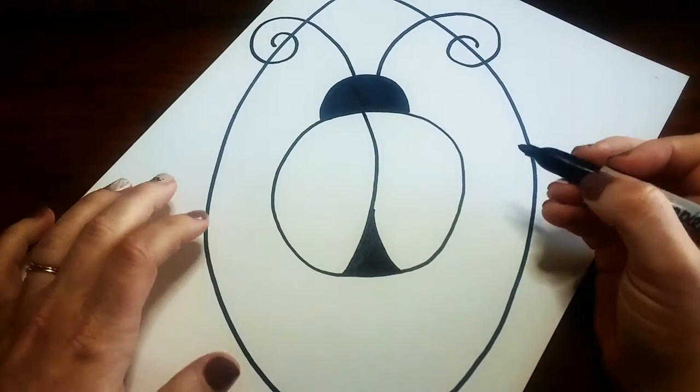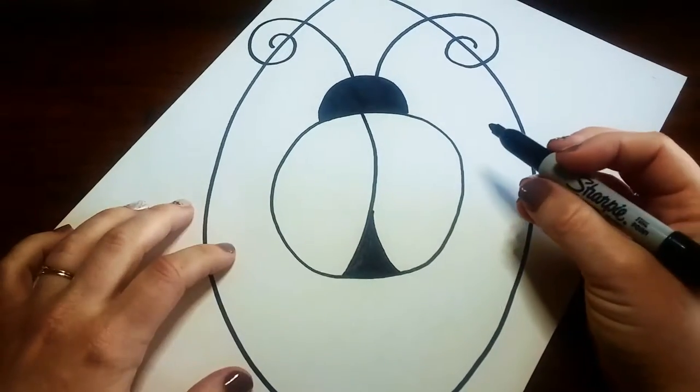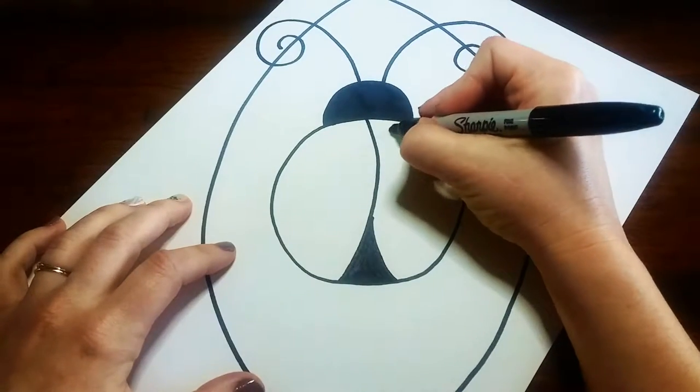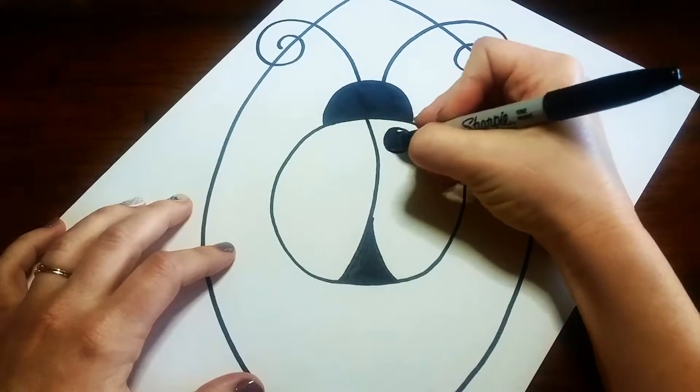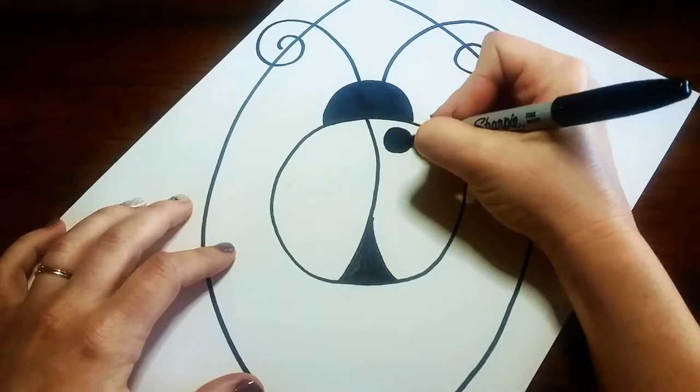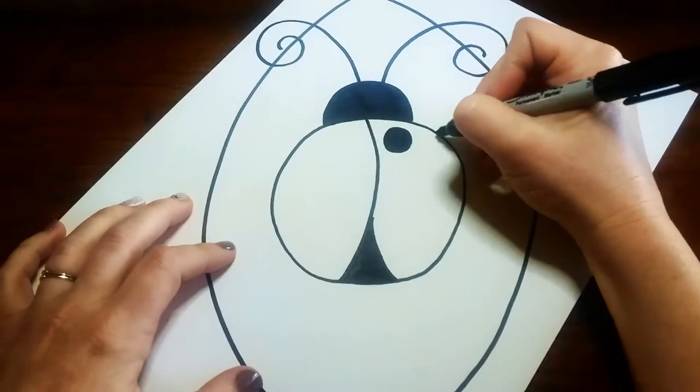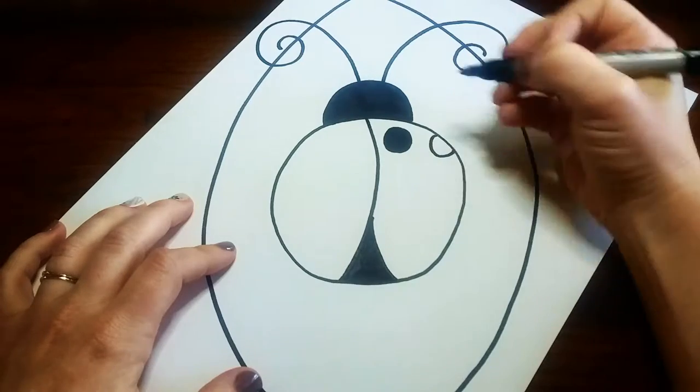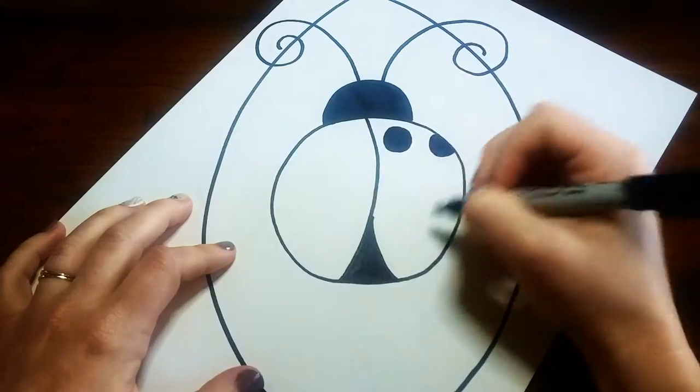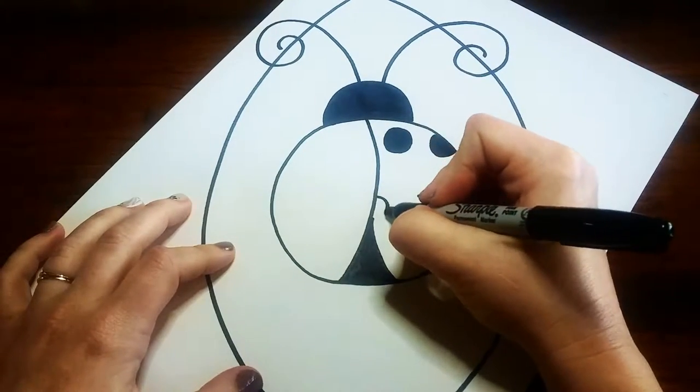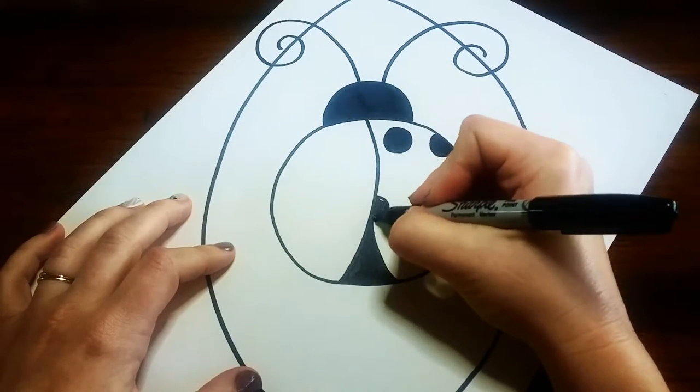Alright so the only thing we have left are the spots and the legs. So I'm gonna start with the spots here and what I like to do is draw some that are in the center so some circles and then I might do some that are half circles. Just like this. So that's just a curved line that I'm filling in. And I can do that around the edges and then also here along the wings in the center.